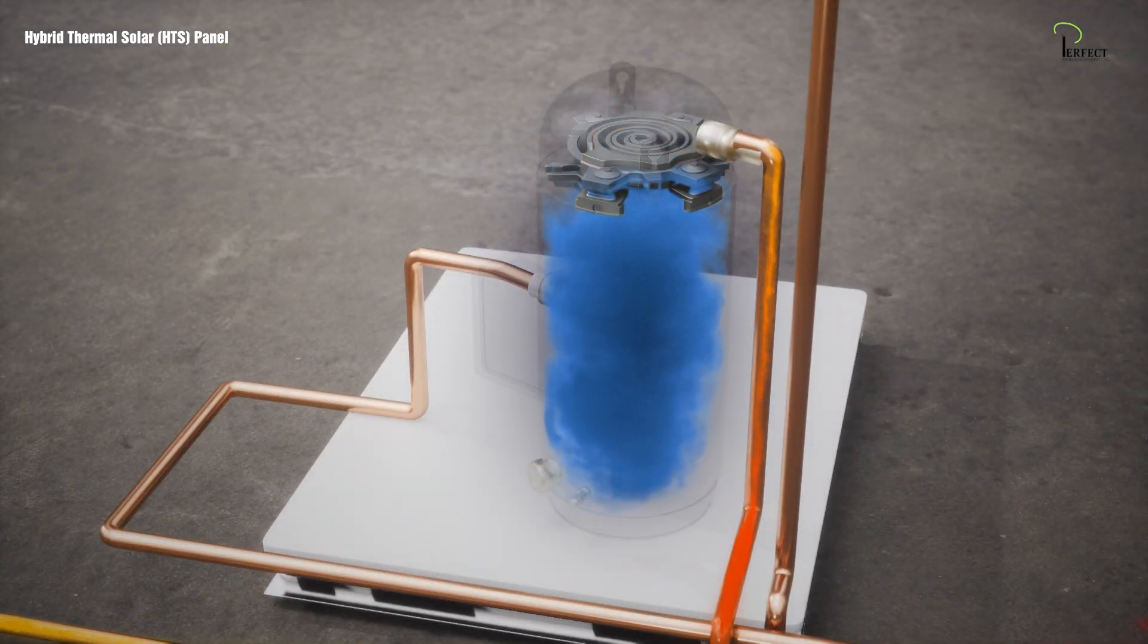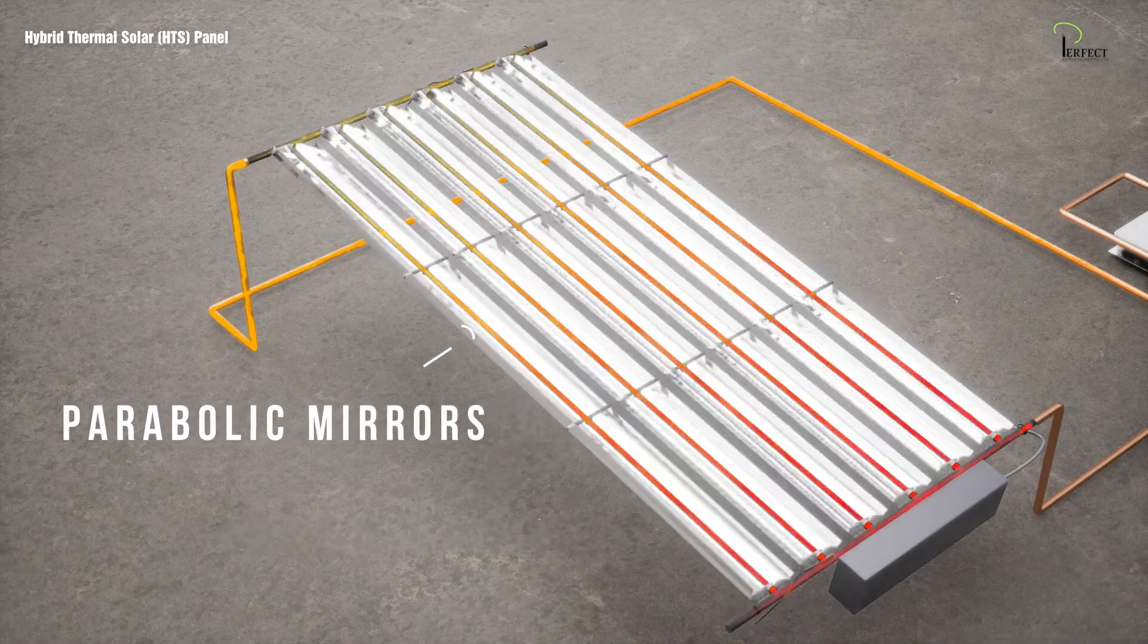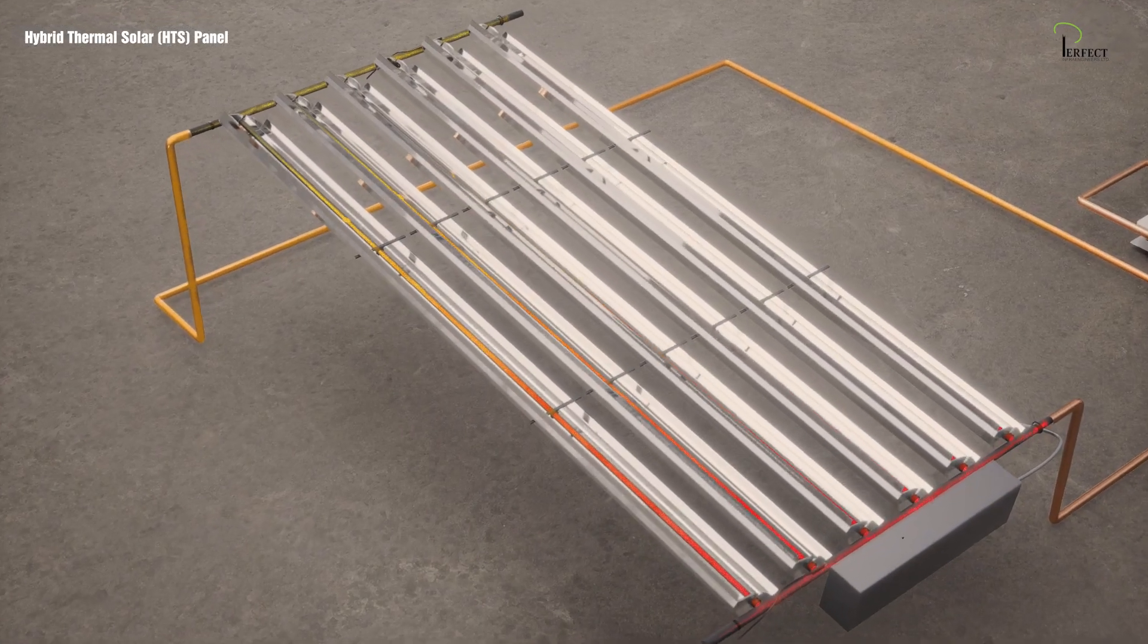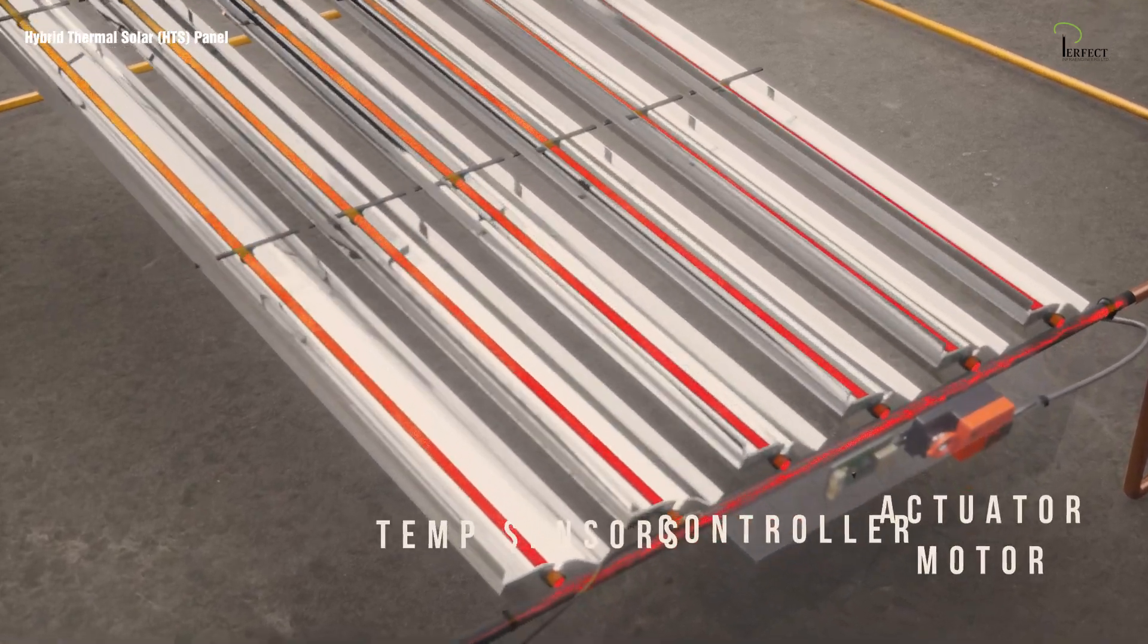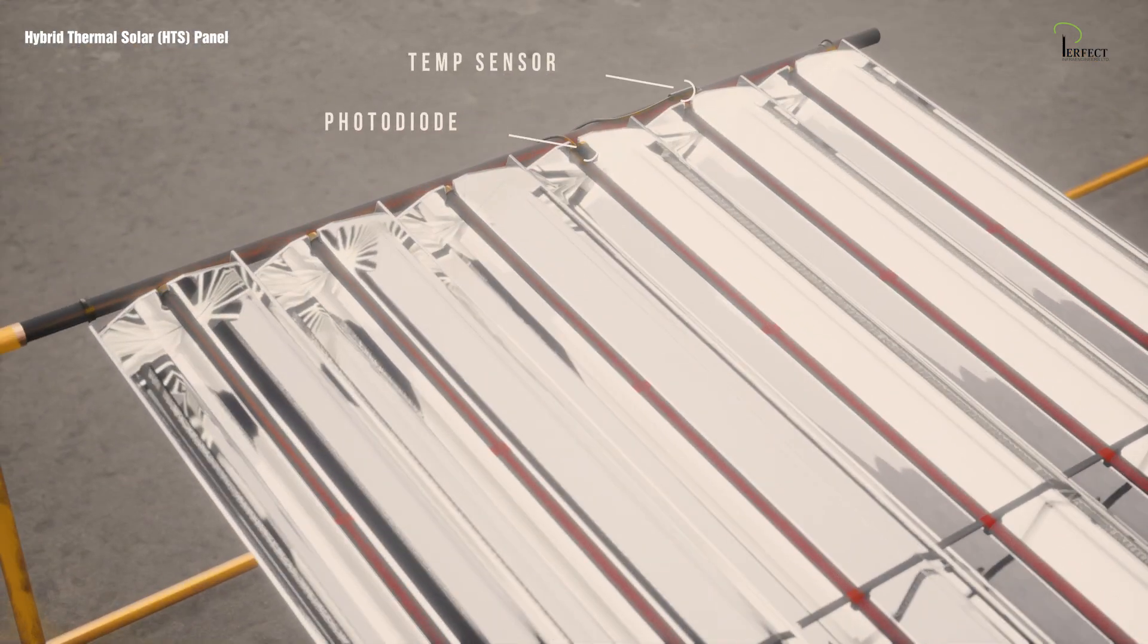The gas from the compressor enters the six copper pipes that run the length of the HTS panel. These pipes are heated by parabolic mirrors that reflect the sun's rays. The mirrors are moved by an actuator motor and sensors that track the sun.